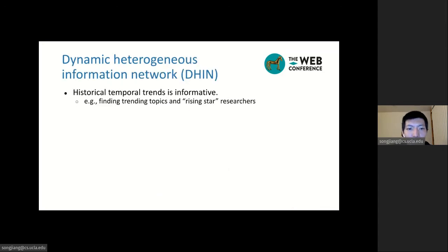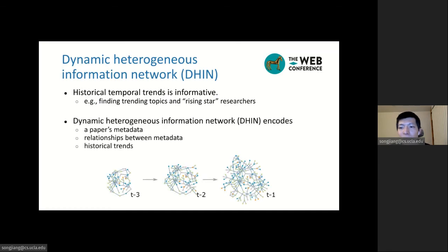Metadata can tell us whether this new paper has reputable authors or in cutting-edge venue. Beyond these indicators, the historical temporal trend in terms of citation is also very informative to the impact of a new paper. For example, the historical temporal trend can reflect the trending topics and the rising star researchers. Therefore, we use a dynamic heterogeneous information network to model the metadata. A dynamic heterogeneous information network encodes three aspects: the new paper's metadata, the relations between those metadata, as well as the historical trends of those metadata.